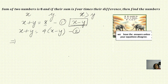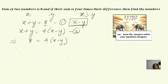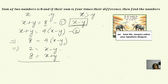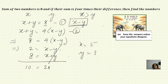In the second equation, we substitute x plus y with 8. So 8 is equal to 4 into x minus y, which implies 2 is equal to x minus y. Now bringing the first equation x plus y equals 8, and by simply adding, the y terms get cancelled. So 2x equals 10, which implies x equals 5. If x is 5, then y equals 8 minus 5, that is 3. So the first number is 5 and the second number is 3.